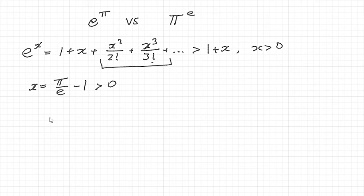If I plug this into the inequality here, we get e to the pi over e minus 1 is bigger than 1 plus pi over e minus 1. The 1 and minus 1 cancel, so I'm just left with pi over e on the right hand side.